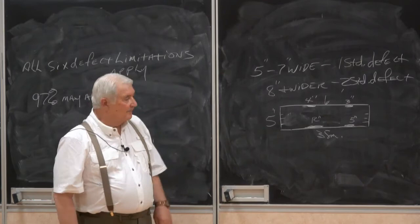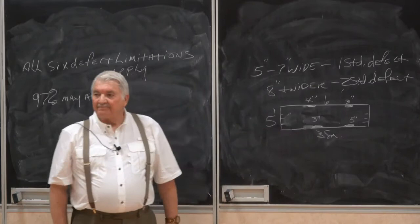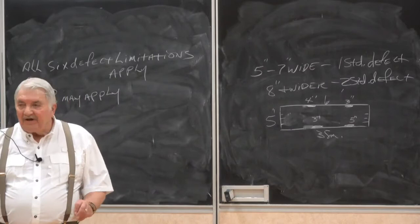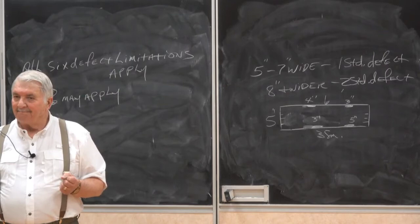I put 12 inches - that's one standard defect wane. Any time it goes over the amount of free, even if I had 1 inch, that's one standard defect. What's the maximum amount you're allowed for one standard defect? Two times the length in inches.